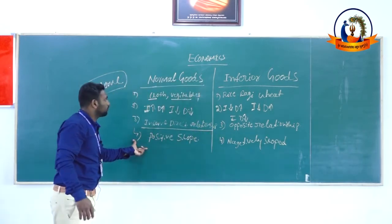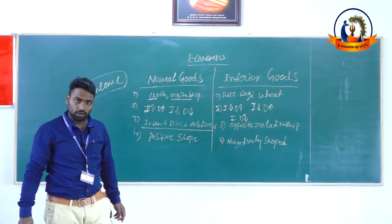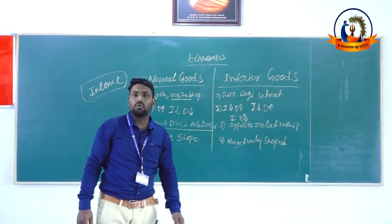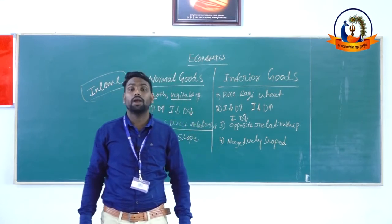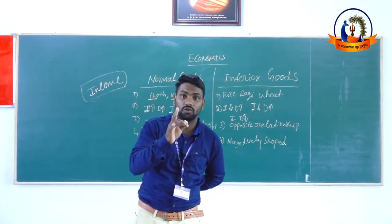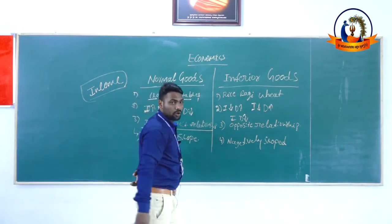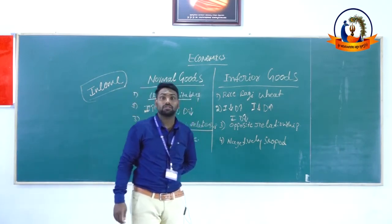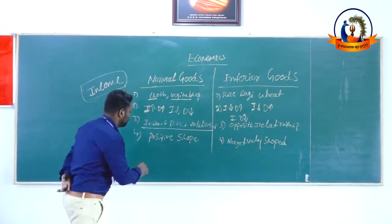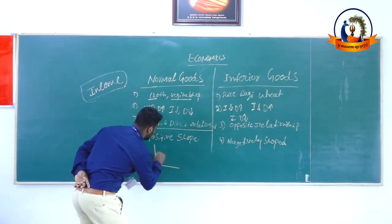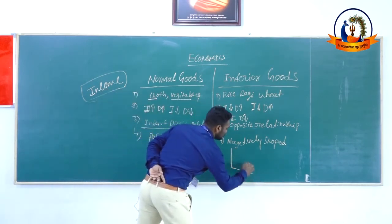The next difference: for normal goods, the demand curve is positively sloped. The normal goods demand curve is always positively sloped. But for inferior goods, the demand curve is always negatively sloped.